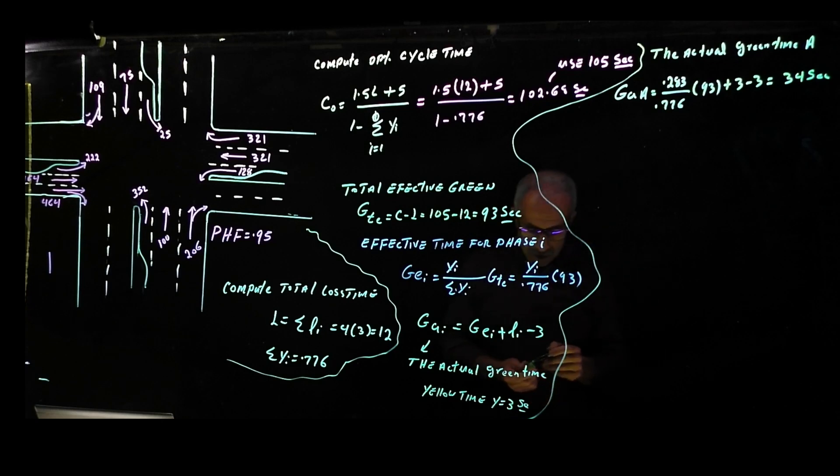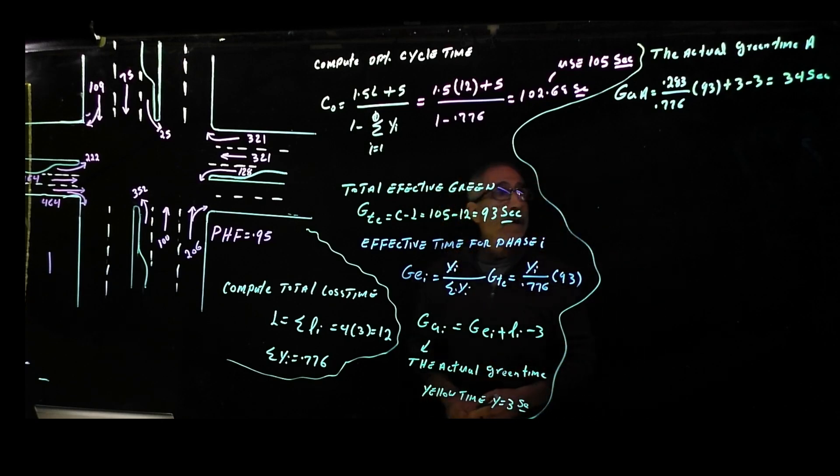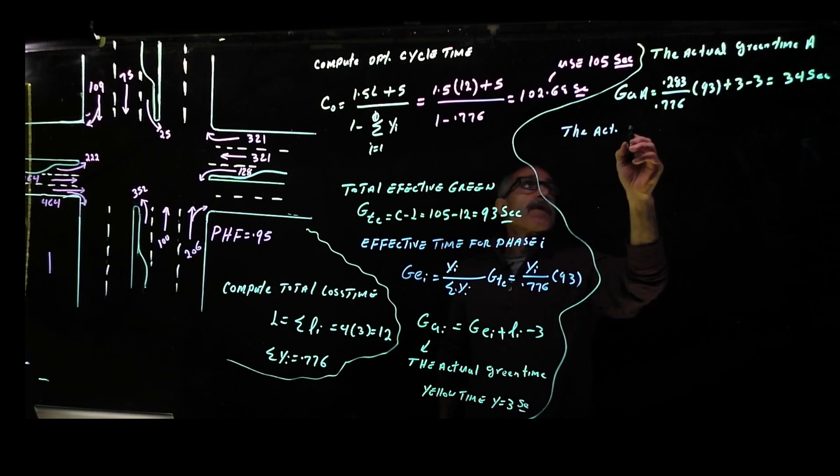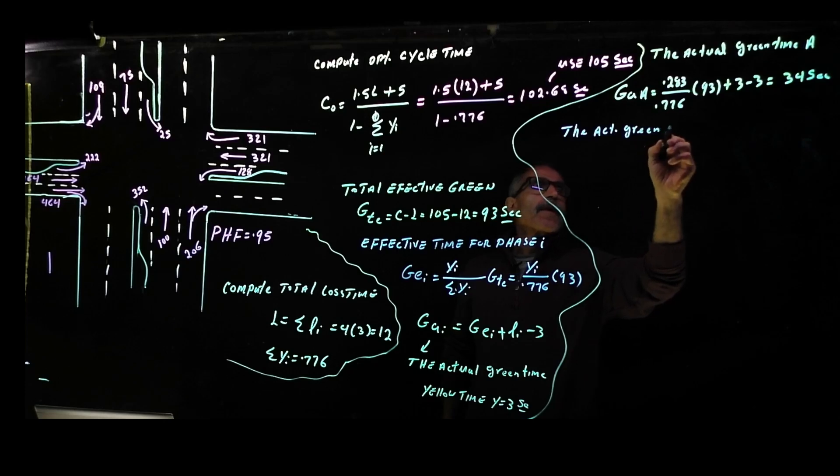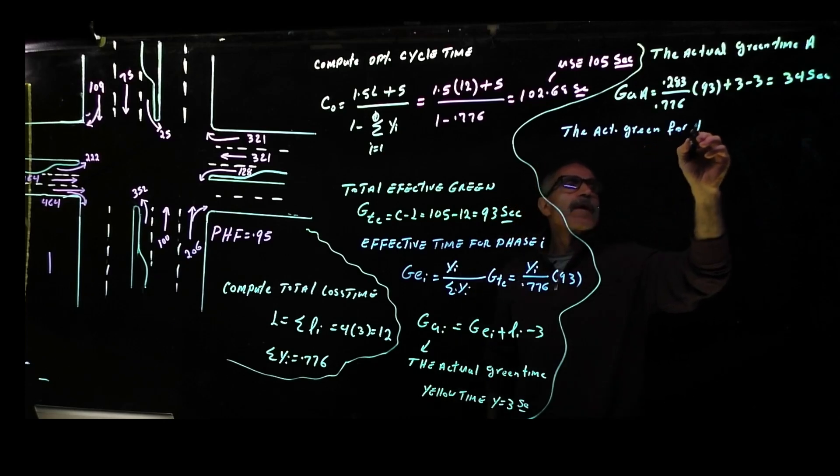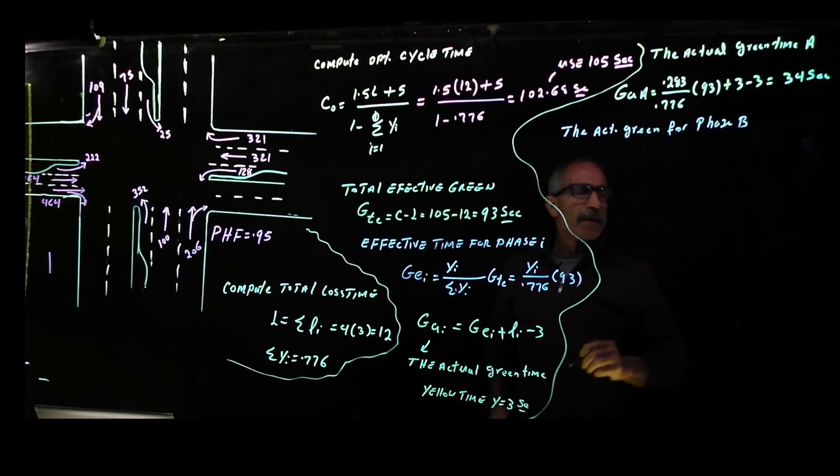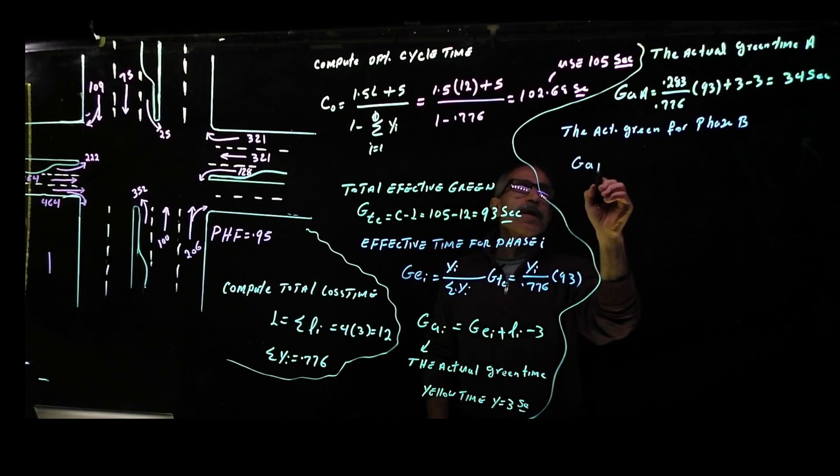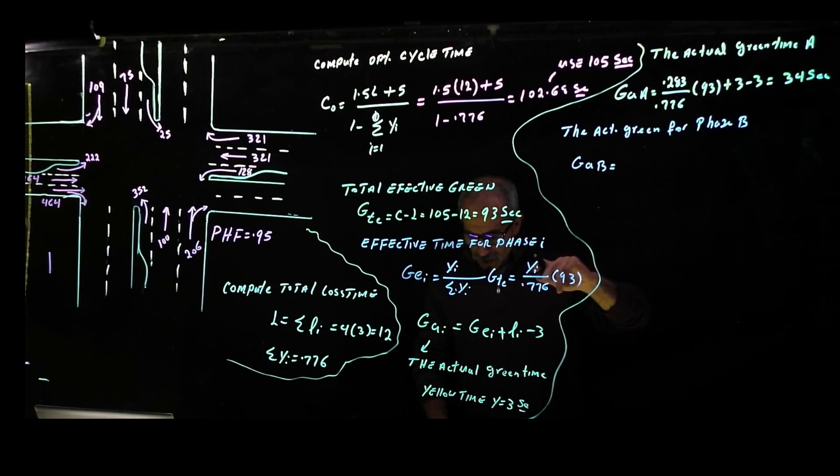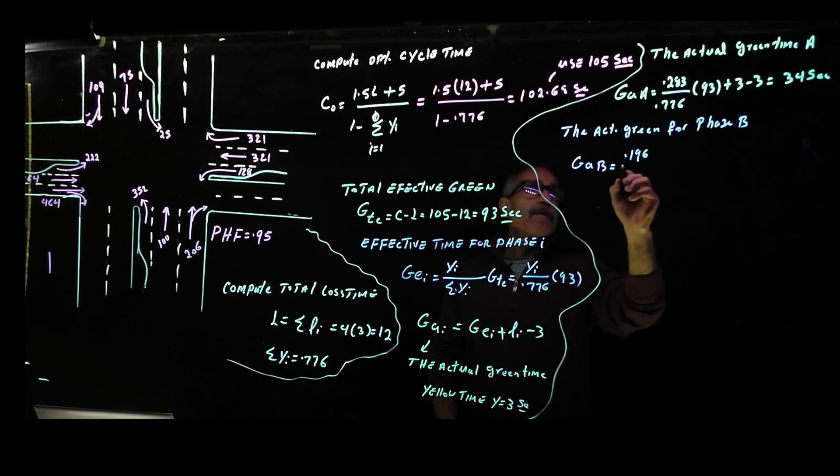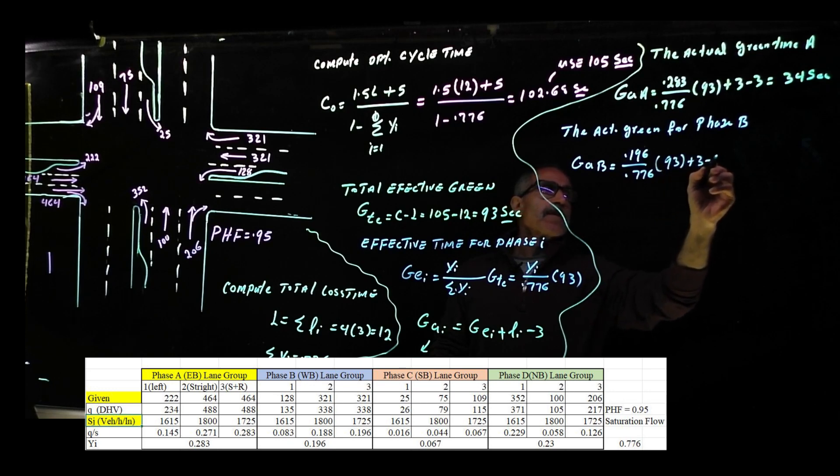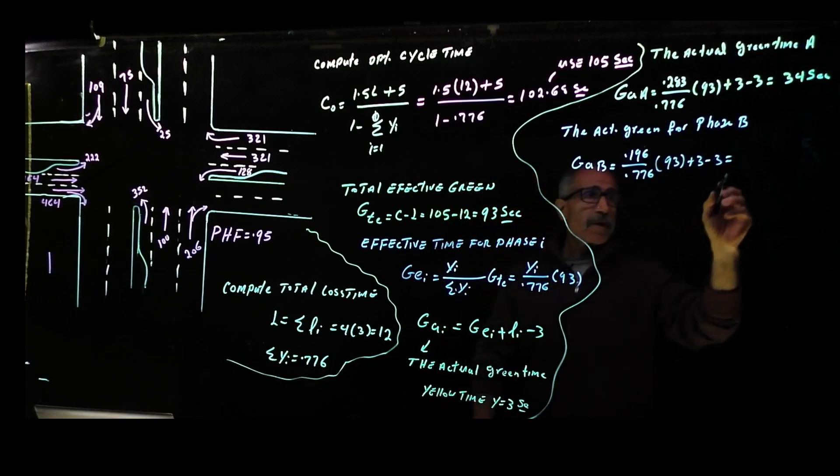Now I'm going to find the actual green time for phase B. GAB equals, and the total for that one came out to 0.196 divided by 0.776 times 93 plus 3 minus 3, and that comes out to 23.5 seconds.